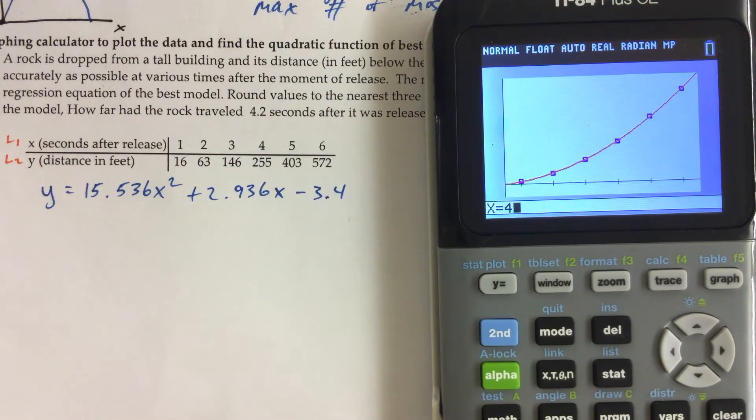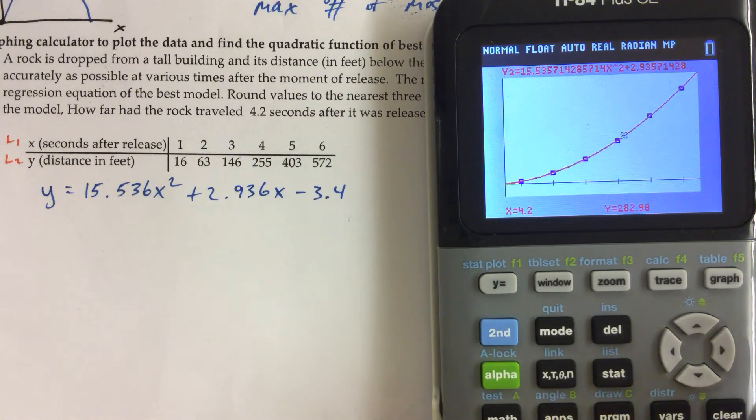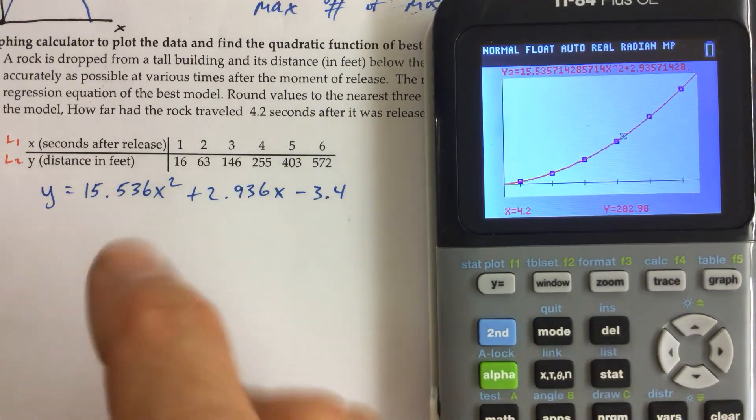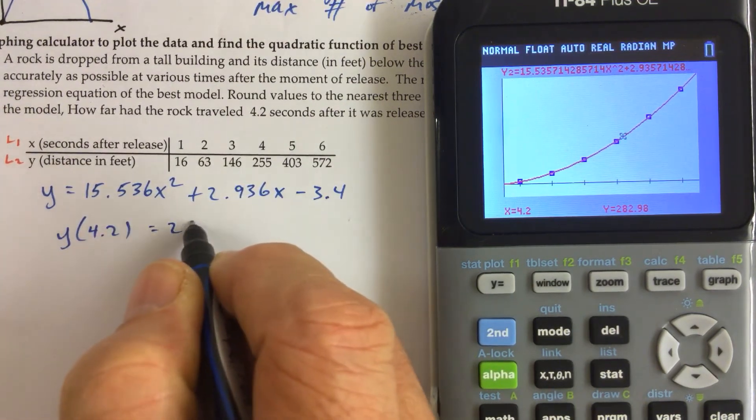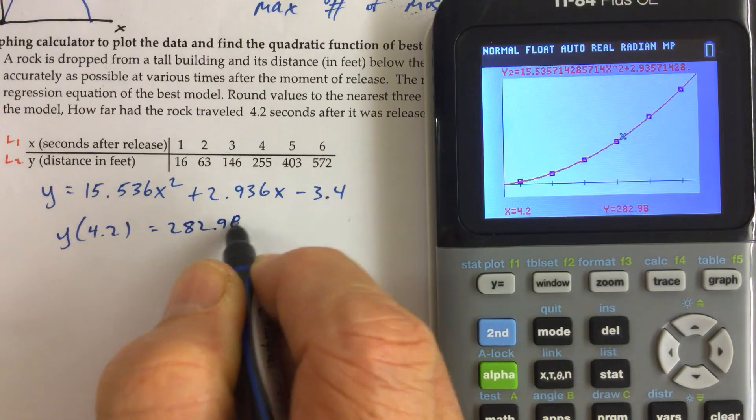And then 4.2, I can hit enter. So how far did it travel? 282. Y of 4.2 is 282.98 feet.